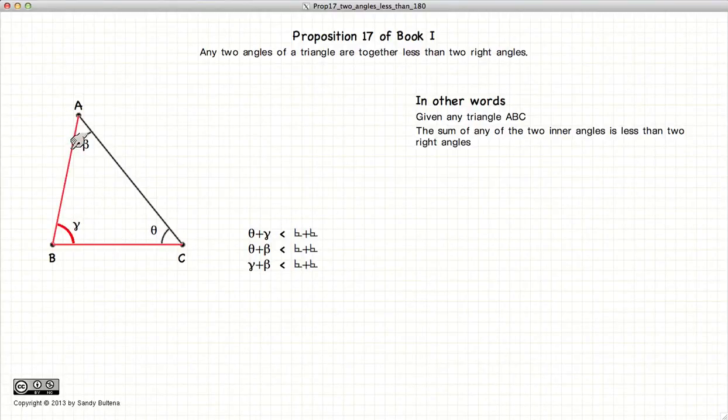So gamma plus beta is less than 180 degrees, theta plus beta is less than 180 degrees, and similarly gamma plus theta is less than 180 degrees.